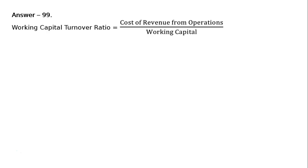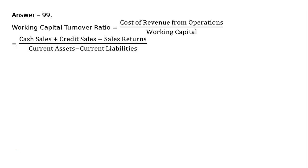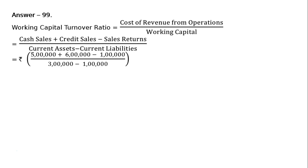This is answer 99. Working capital turnover ratio is equal to cost of revenue from operations divided by working capital, that is equal to cash sales plus credit sales minus sales returns, divided by current assets minus current liabilities.